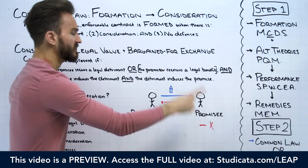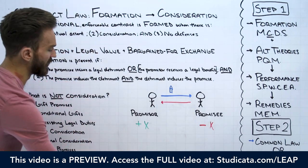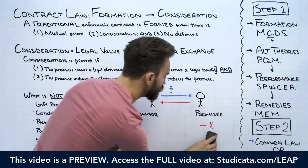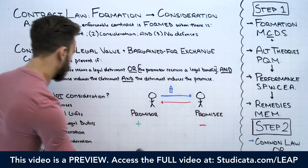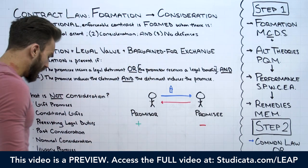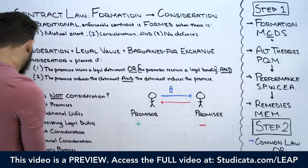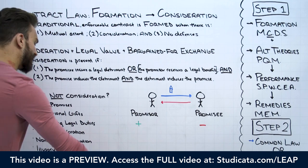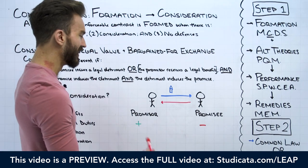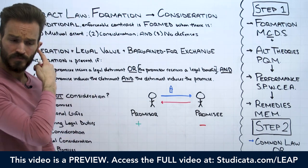Remember, there's always this idea of alternative theories — promissory estoppel, quasi-contracts, moral obligations — and we'll talk about these later. But right now, we're talking about the traditional enforceable contract, which is only going to be enforced in court if we have an offer and acceptance supported by consideration. No consideration, no traditional enforceable contract.